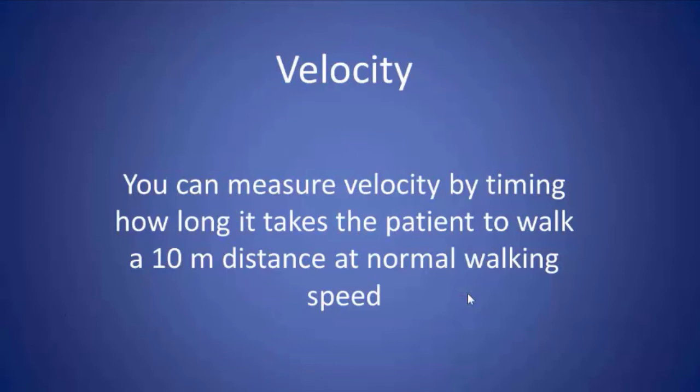You can study velocity by timing how long it takes the patient to walk a 10-meter distance. Place two markers 10 meters apart, have the patient start several steps before the first marker and continue past the second, timing only the 10-meter interval. You can then calculate velocity, which is a very important parameter for children who want to keep up with their peers. This brings us to the end of the second part; we'll continue with part three.